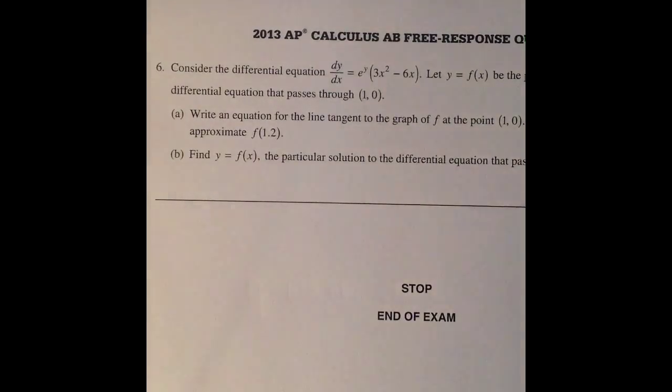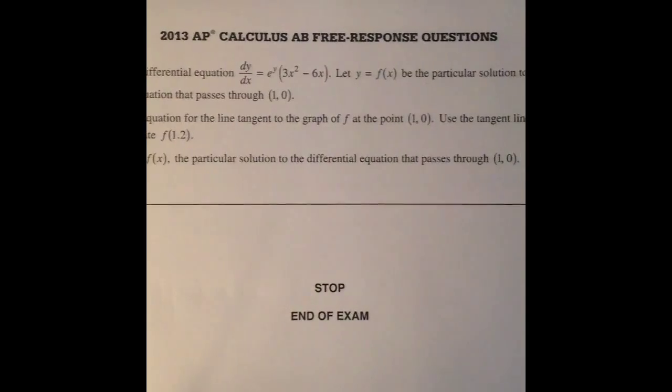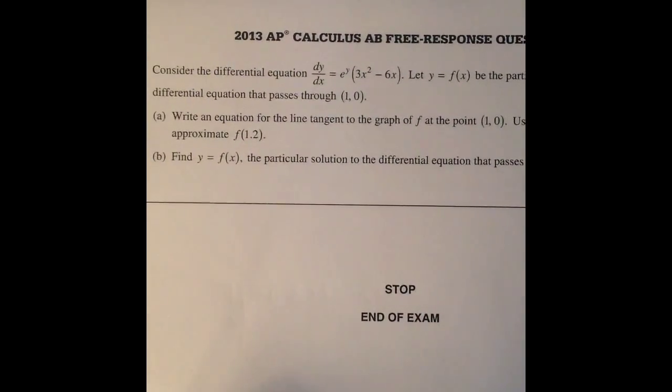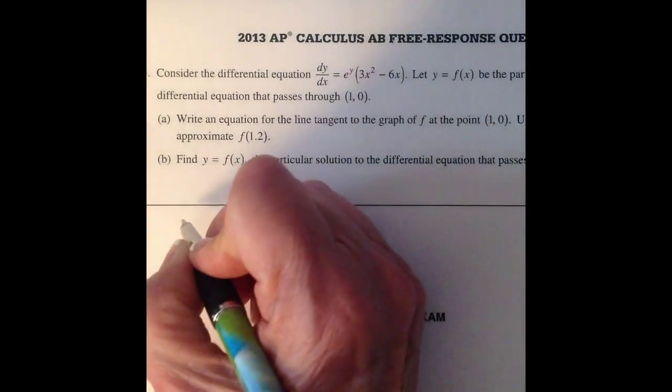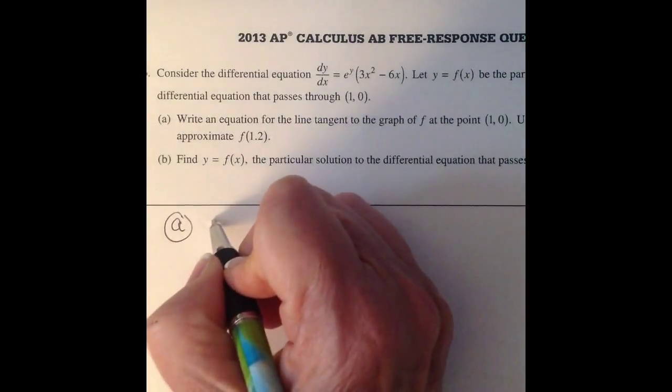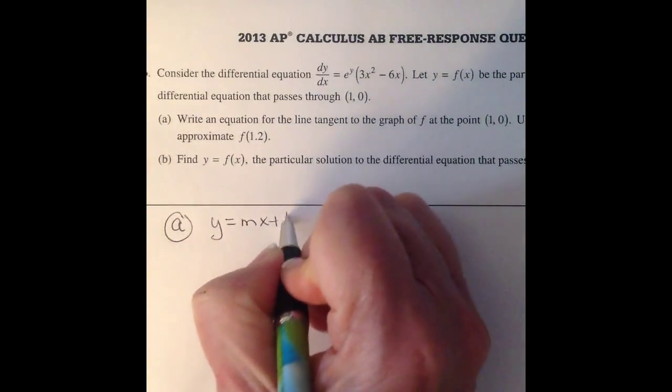Part (a) says write an equation for the line tangent to the graph at f at the point (1,0). Use the tangent line to approximate f(1.2). So let's think about what we would do. To write an equation of a tangent line, remember we need y = mx + b. So we need a slope and a point.